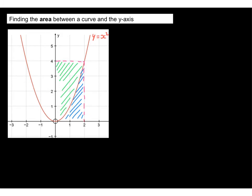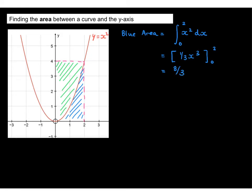So how do we calculate the area of the blue region? This is equal to the integral between 0 and 2 of x squared with respect to x. This gives us one third x cubed between limits of 0 and 2, and the answer will be 8 thirds. The green area will then be equal to the area of the rectangle, which is 2 by 4, subtract 8 thirds, and that leads us to an answer of 16 thirds square units.